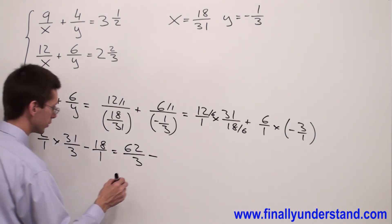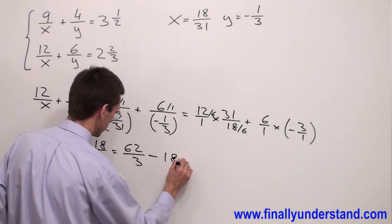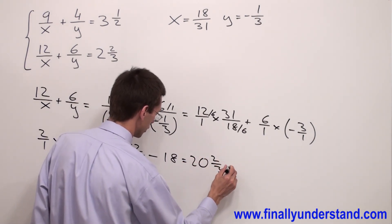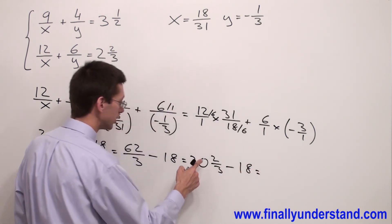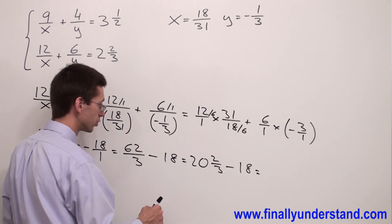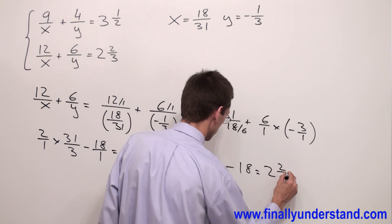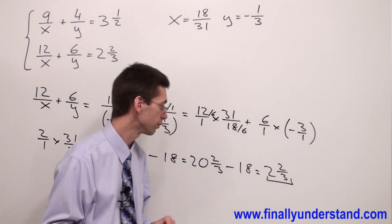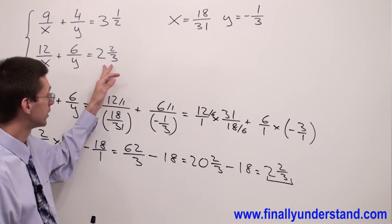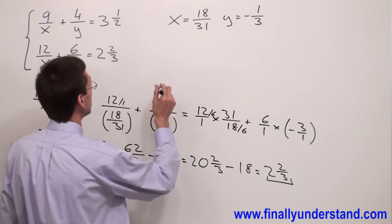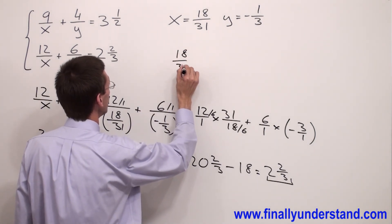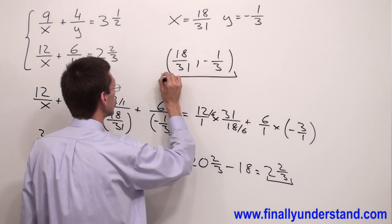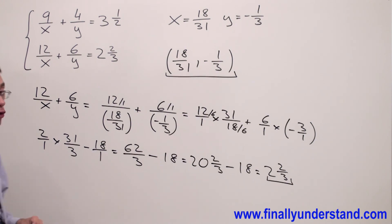And 6 times negative 3 equals negative 18 over 1, which is negative 18. So we have 62 over 3 minus 18. 62 divided by 3 equals 20 and 2 thirds, minus 18, equals 2 and 2 thirds. The left side of the second equation equals the right side, confirming that the ordered pair x equals 18 over 31 and y equals negative 1 third is the correct solution to this system of linear equations.